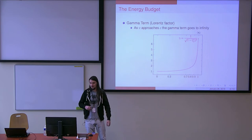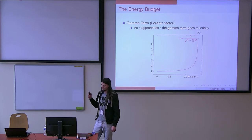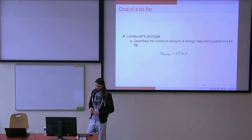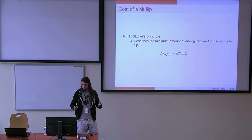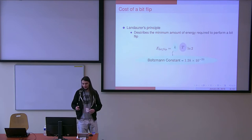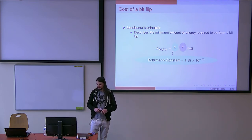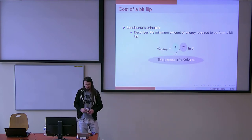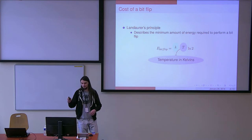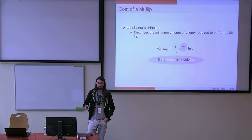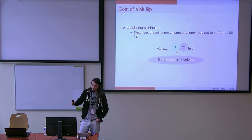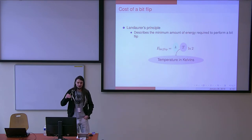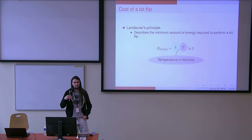So this is how we are going to work with the energy budget. The cost of a bit flip is described by Landauer's principle. K is the Boltzmann constant in joules per Kelvin, and T is the temperature of the system in Kelvins. The temperature I'm going to use is the temperature of the cosmic microwave background, because using anything else means we'd need to supply more energy to cool the system down than we'd gain in bit flips for the same joules.